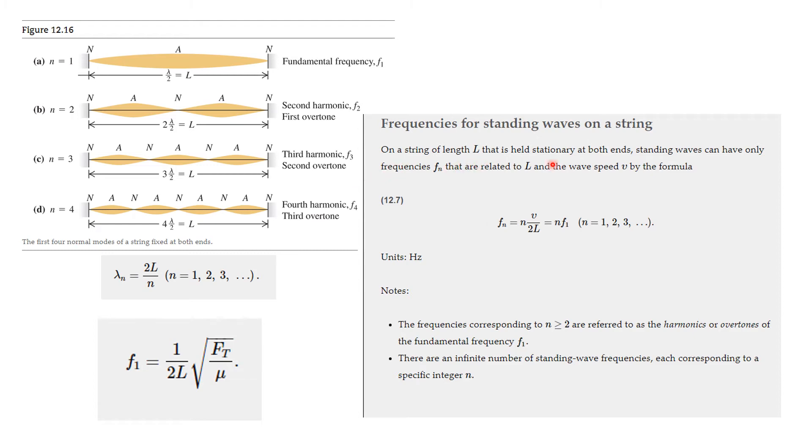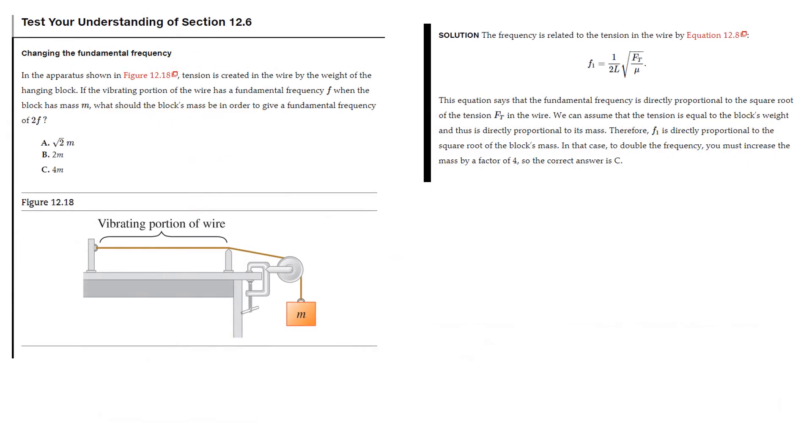The units on these F sub ns are hertz because they're frequencies. The frequencies corresponding to n greater than or equal to 2 are the harmonics or overtones of the fundamental frequency. If you've studied music theory, you know a lot about this. There are an infinite number of standing wave frequencies, each corresponding to a specific integer: 1, 2, 3, and so on.